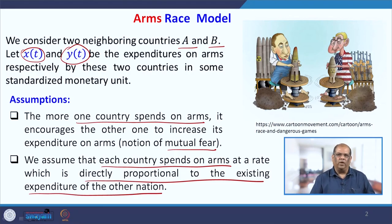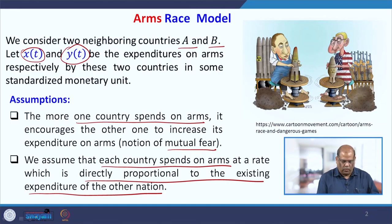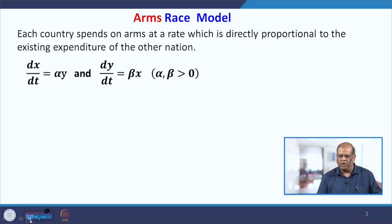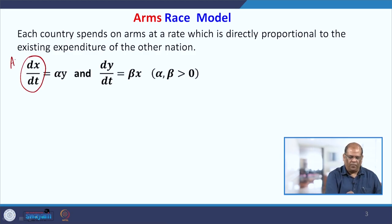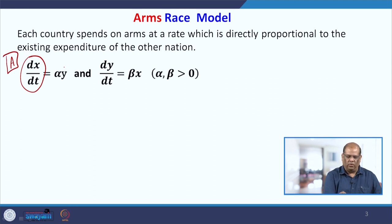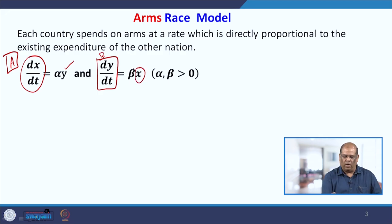So while building the model, you have to assume that each country spends on arms at a rate which is directly proportional to the existing expenditure of the other nation. If the other country is spending Y amount, country X is also spending a proportional amount dependent on Y. If X is the amount country A is spending, it is proportional to Y; Y is the amount country B is spending, proportional to what country A is spending. Alpha and beta are the proportionality constants, taken to be positive.